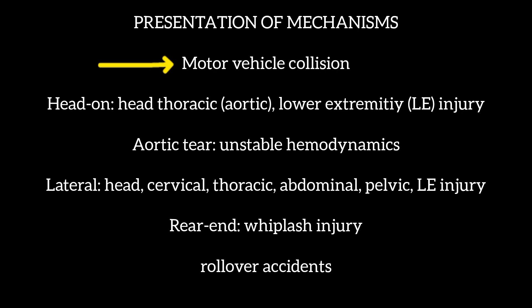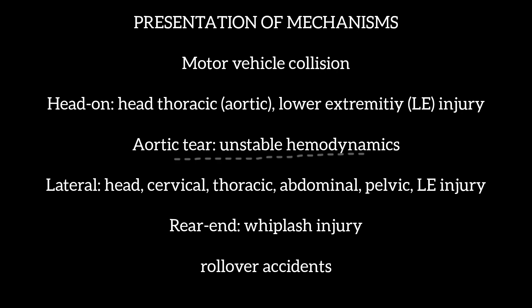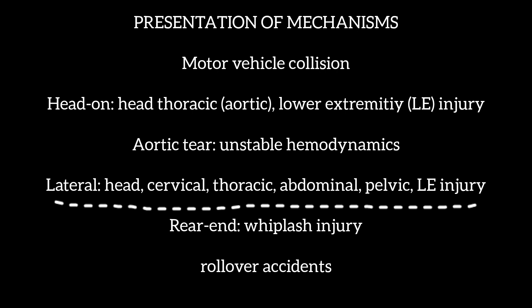First we will talk about motor vehicle collision. In a head-on collision, there can be head or facial injuries, and sometimes the thorax can be blunted. There is also a possible chance of aortic transection or aortic tear. Thoracic blunt trauma causing aortic tear presents with rapidly worsening blood pressure and a widened pulse pressure. Lower extremity injuries are also possible.